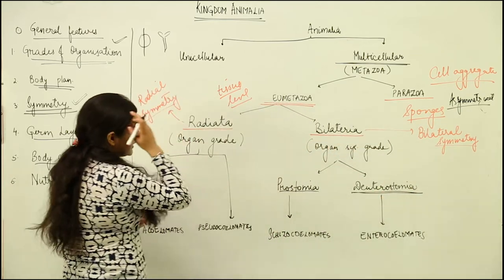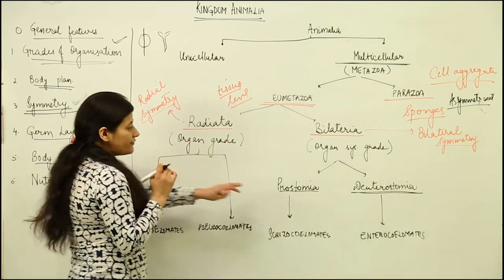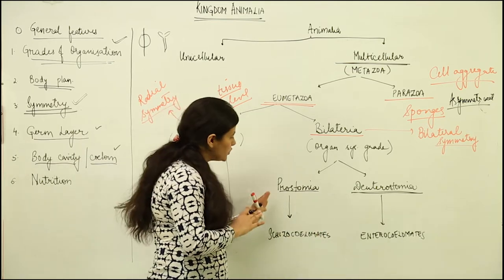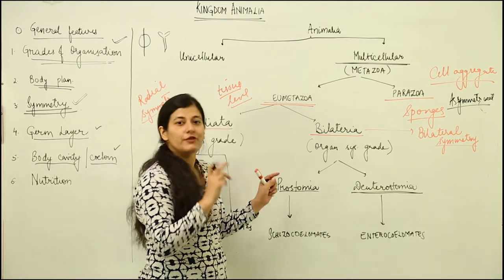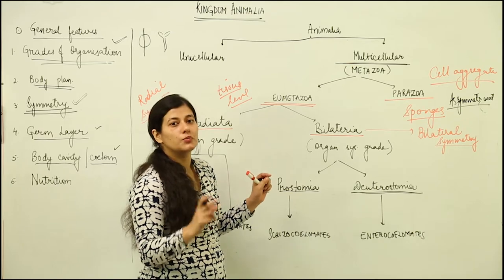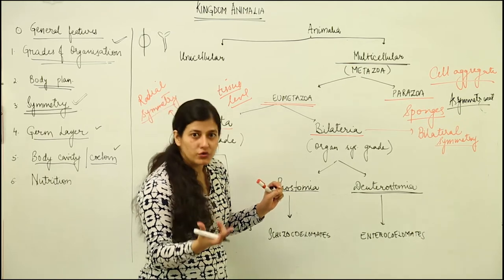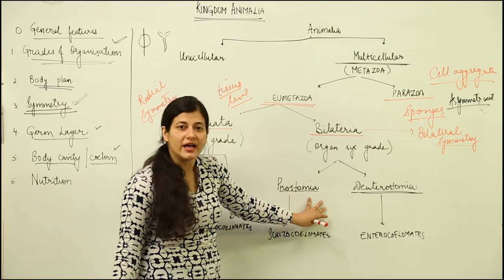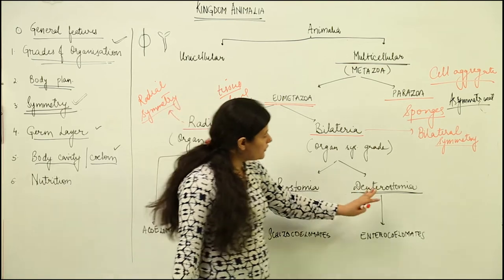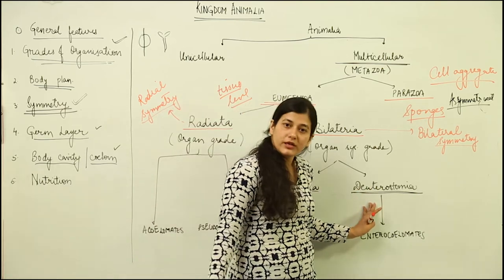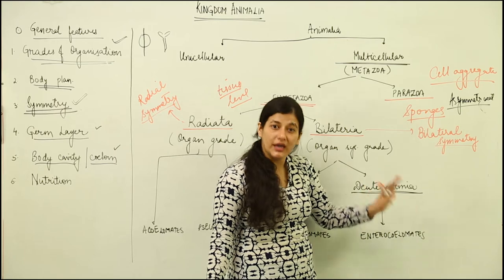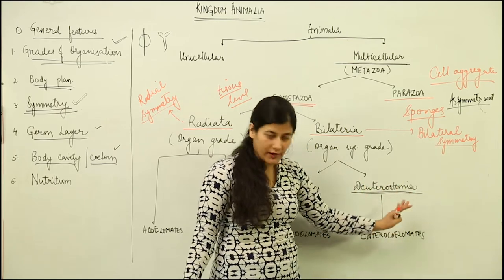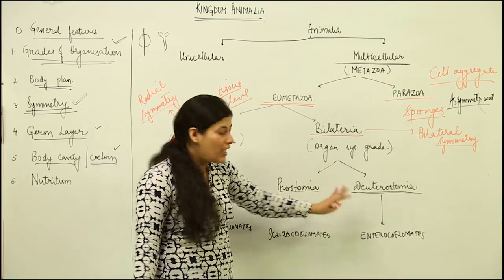In protostomia, if the embryonic blastopore gives rise to the mouth of the organism, that is known as protostomia. If the embryonic blastopore gives rise to the anus, that is known as deuterostomia. These two terms you have to remember.